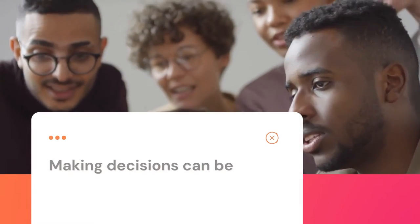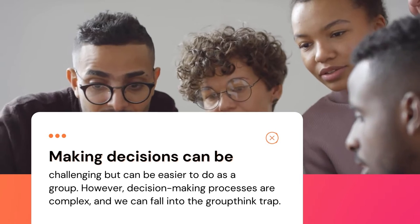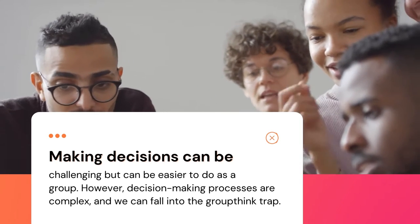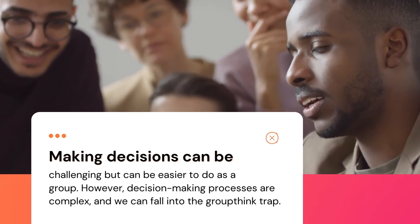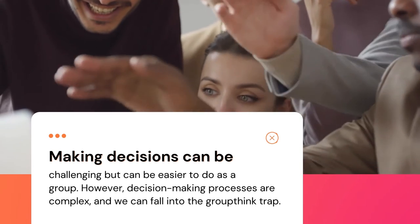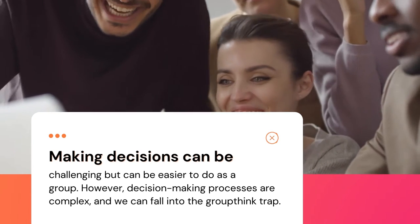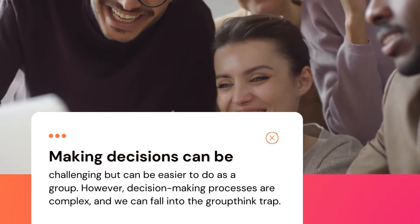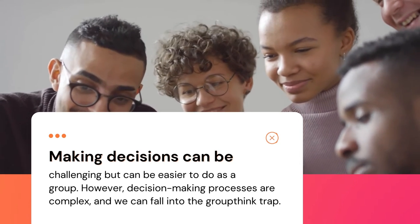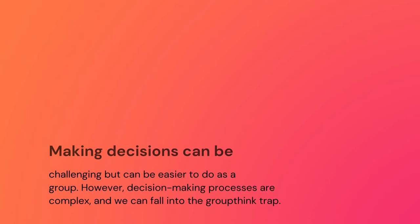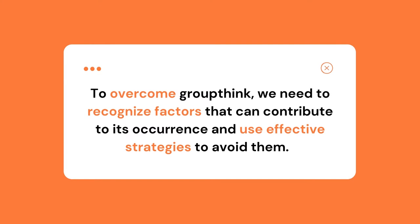Making decisions when we are uncertain about the outcome can be challenging, but can be easier to do as a group because through cooperation we can develop a better understanding and plan of action, which can reduce uncertainty. However, the decision-making process is complex and things can go wrong if we fall into the groupthink trap. To overcome groupthink, we need to recognize factors that can contribute to its occurrence and use effective strategies to avoid them.